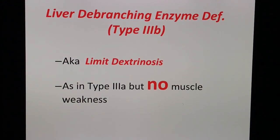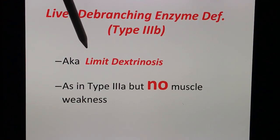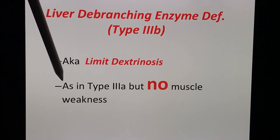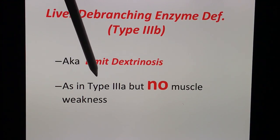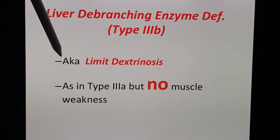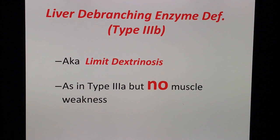Type 3B is also known as limit dextrinosis and is the same as type 3A, but the difference is there is no muscle weakness. Take note of that pearl: type 3B has no muscle weakness.